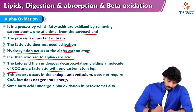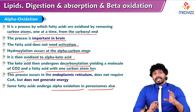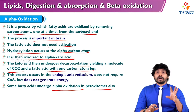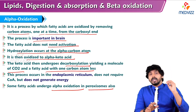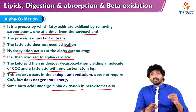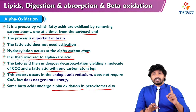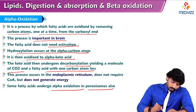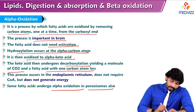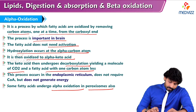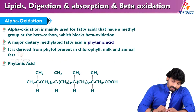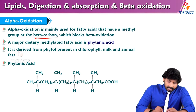Some fatty acids undergo alpha oxidation in peroxisomes as well. Alpha oxidation is specifically taking place in the brain, removing one carbon at a time through hydroxylation and decarboxylation. Alpha oxidation is mainly used for fatty acids that have a methyl group at the beta carbon, which blocks beta oxidation. This is the main reason behind alpha oxidation. An example is phytanic acid — derived from phytol present in chlorophyll, milk, and animal fats.